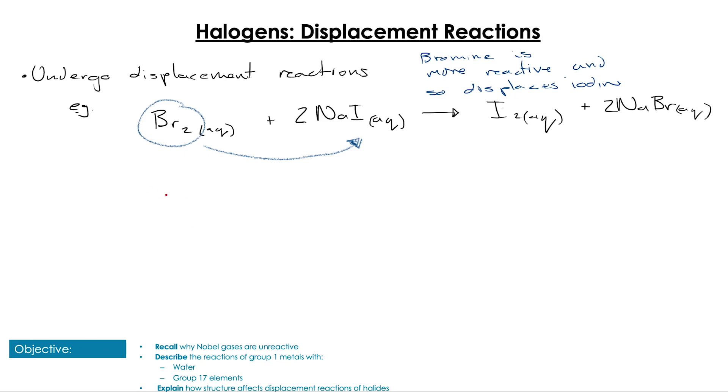The inverse is also true. If we add an atomic halogen such as iodine to NaBr, there will be no reaction because iodine is less reactive than bromine and therefore cannot displace it.